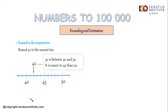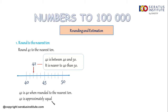So we can conclude that 42 is 40 when rounded to the nearest 10. So 42 is approximately equal to 40 — 42 becomes 40 when we round to the nearest 10. That's for main point number one.